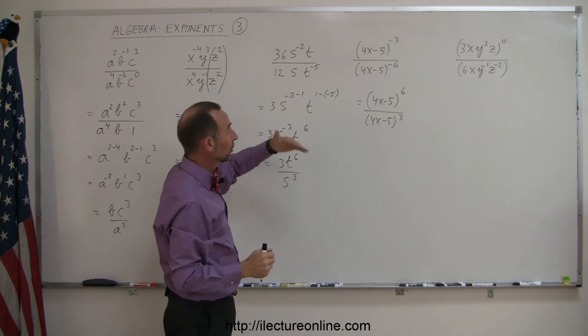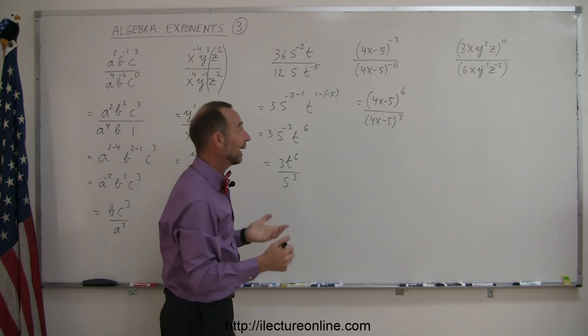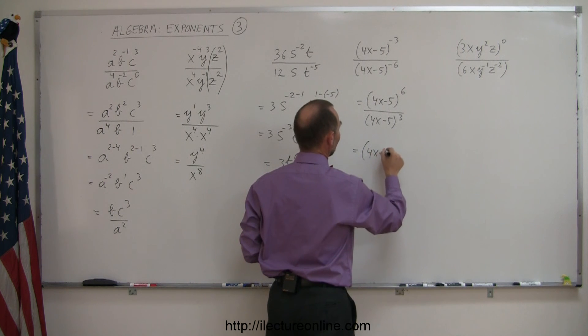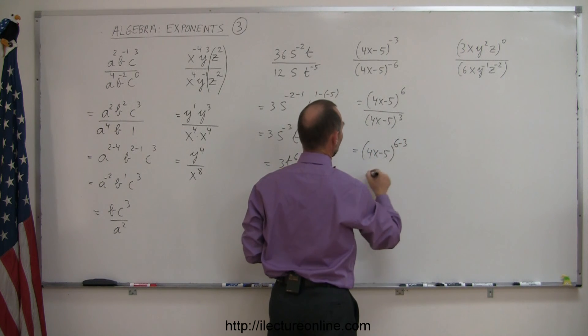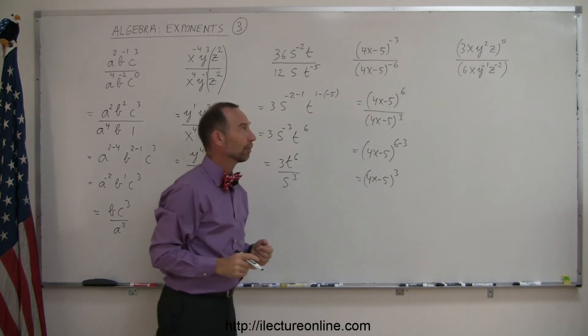Simply by moving the top to the denominator, the denominator to the top, the exponents now become positive. And then I use a quotient rule, so this becomes 4x minus 5 to the 6 minus 3 power, or 4x minus 5 to the third power. And that's a simplified form of that.